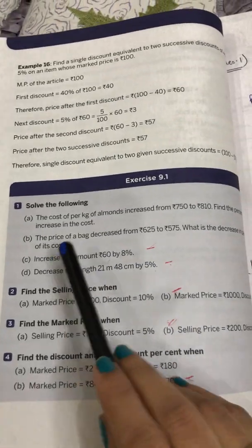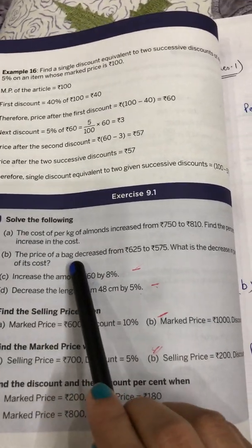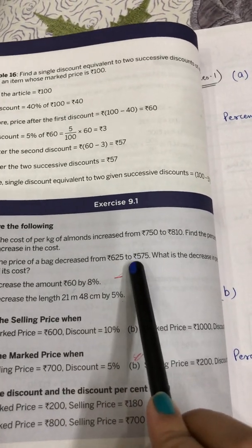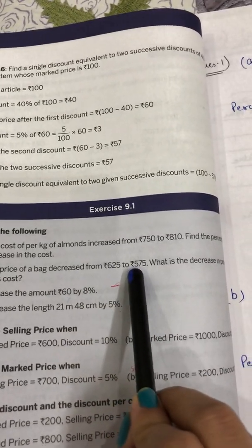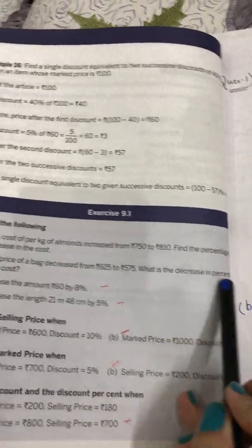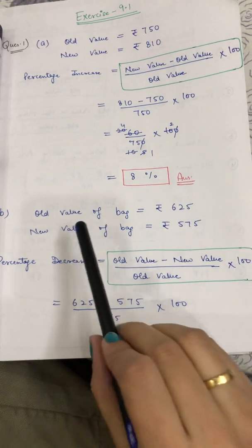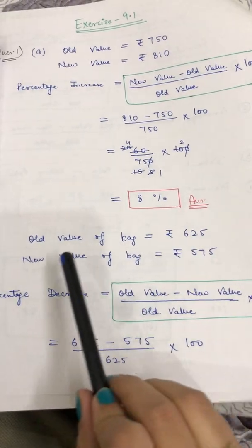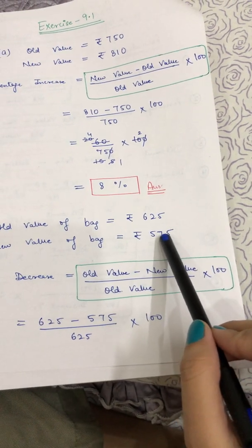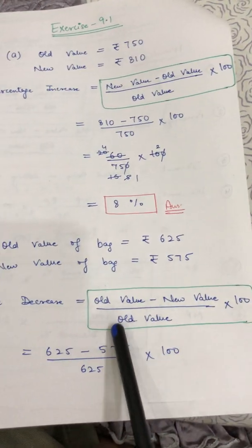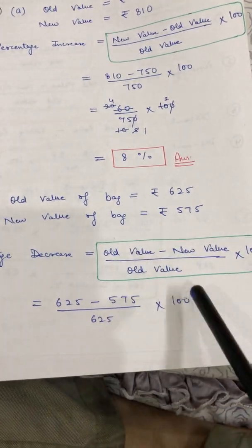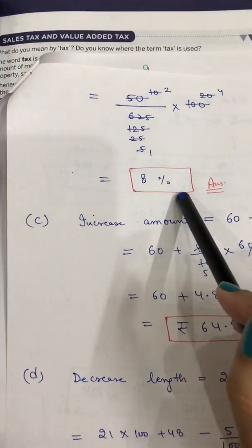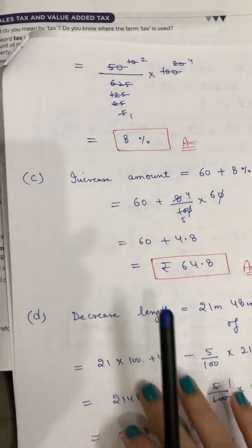The next part is similar to the first. The price of a bag decreased from 625 rupees to 575 rupees. Find the decrease percentage. So old value of the bag is 625 rupees and new value is 575 rupees. Percentage decrease equals old value minus new value, divided by old value, multiplied by 100. Put in the values, cancel the terms, and your answer will be 8 percent. This is the decrease percent.